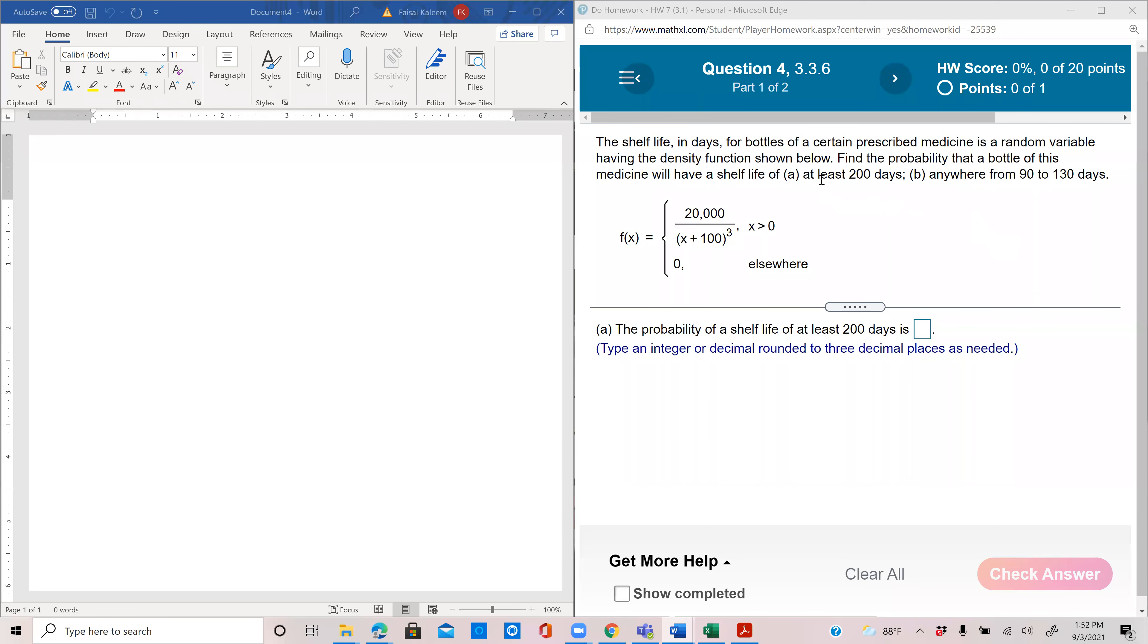The shelf life for bottles of a certain prescribed medicine is a random variable having the density function shown below. Find the probability that a bottle of this medicine will have a shelf life of at least 200 days, anywhere between 90 and 130 days.